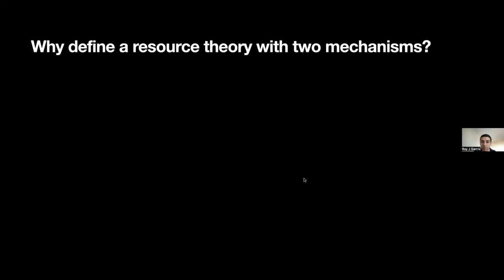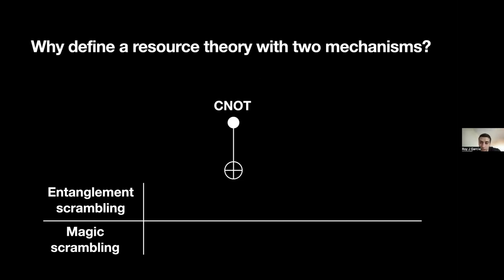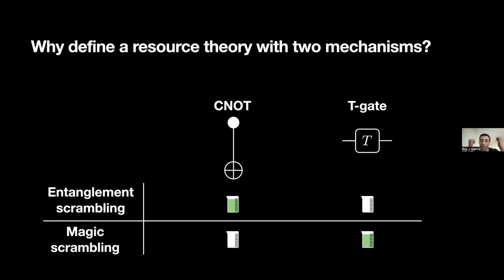The reason we define a resource theory with two different mechanisms is because each of them is independent. For example, the CNOT gate can generate entanglement scrambling because it's a two-qubit gate, but CNOT is Clifford so it can't generate magic scrambling. And the T gate is non-Clifford so it generates magic scrambling, but it's a single-qubit gate so it can't generate entanglement scrambling. Here we have two gates which have access to one scrambling mechanism but not the other. If I want to generate scrambling as a whole, I have to combine both types of gates — that's why our resource theory encapsulates both mechanisms.